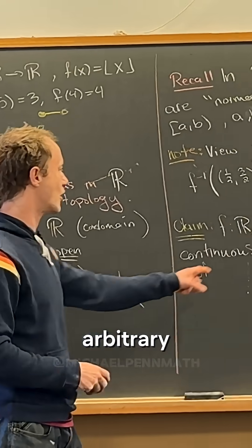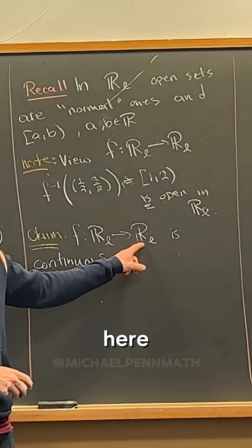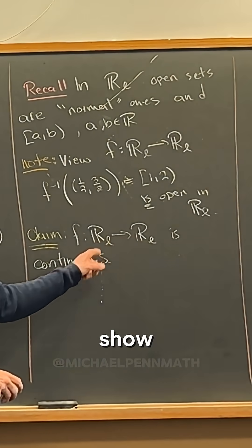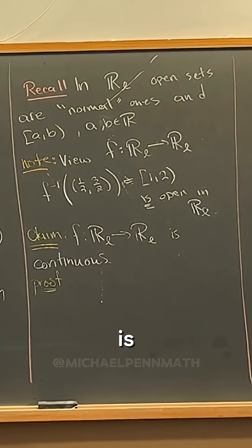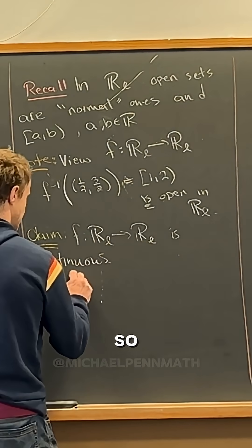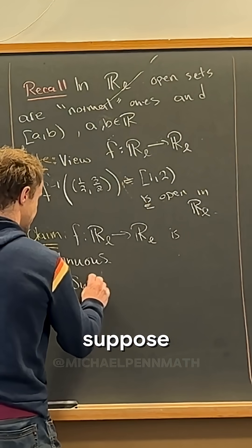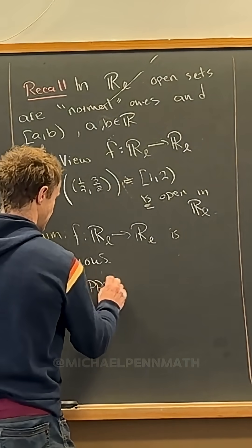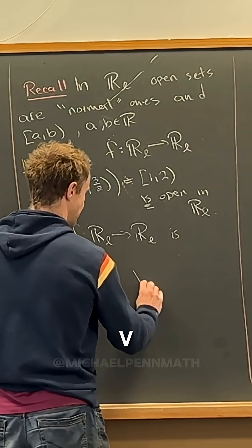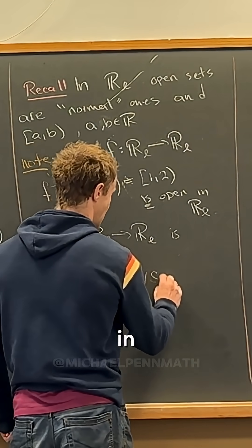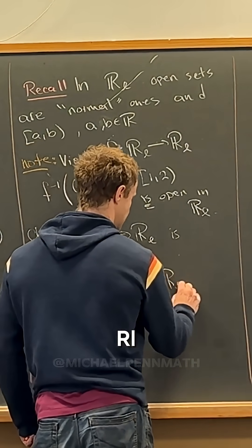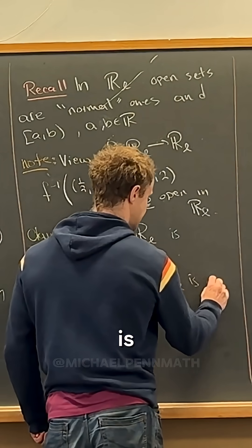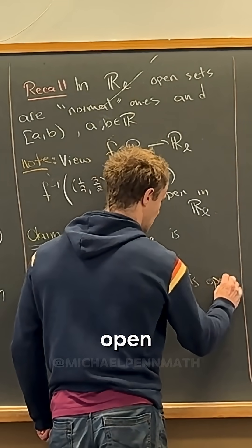We're going to take an arbitrary open set and show that its pre-image is open. So let's suppose that V in RL is open.